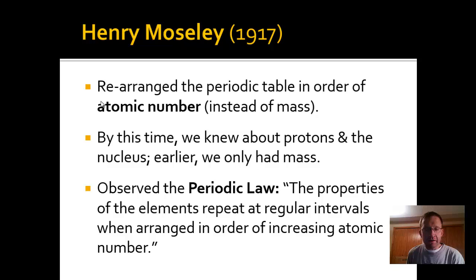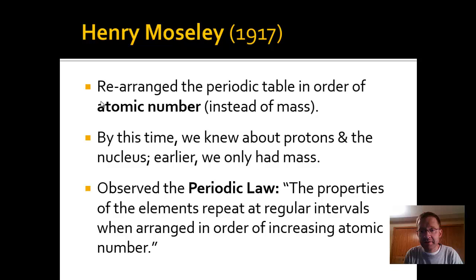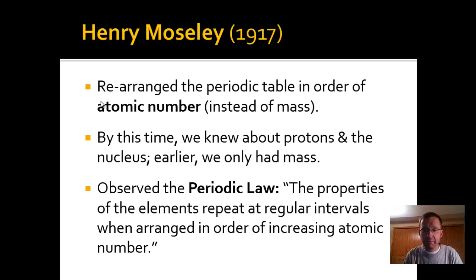What Moseley gives us is something called the periodic law — a fundamental truth of chemistry. It states that the properties of elements repeat at regular intervals when arranged in order of increasing atomic number, from 1 up to 118 protons on our current table. The word 'periodic' itself means repeating at regular intervals: every time we reach the alkali metals or halogens or any other column, we find properties in common.